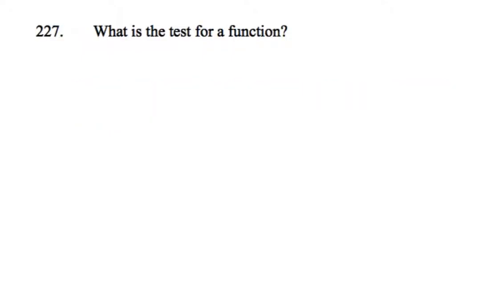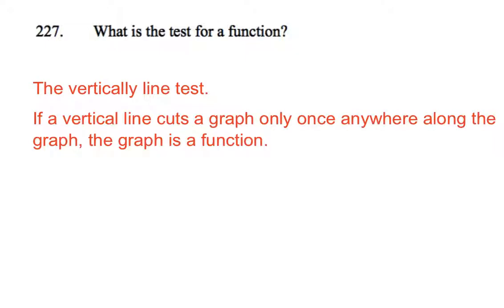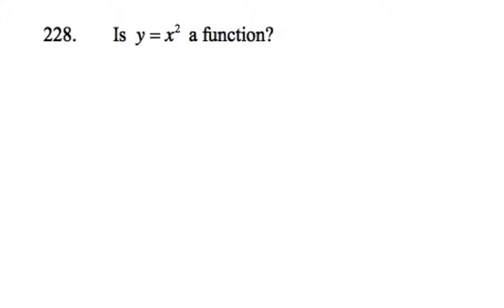What's the test to see whether a certain graph or relationship is a function or not? Well, there's a vertical line test to check whether a relation is a function. If the vertical line that you can draw cuts a graph in only one spot anywhere along the graph, the graph is a function. So the vertical line test tells us whether it's a function or not.